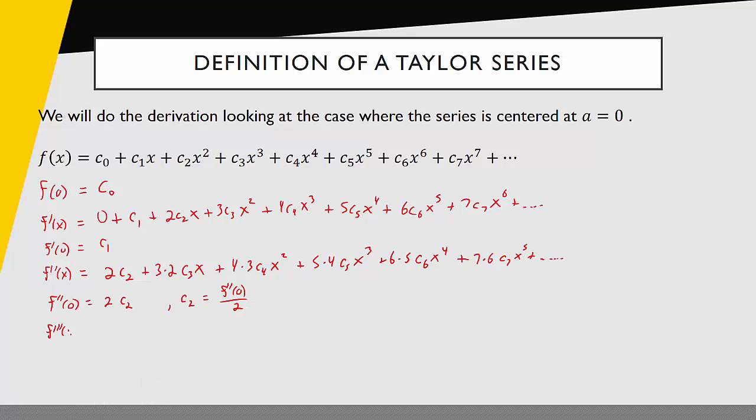Third derivative. Here's what I have for the third derivative. Once again if I evaluate this at zero, I'll get 3 times 2 times c3, and then all the rest of the terms go away. And so now it looks like I have c3 equals the third derivative evaluated at zero divided by 3 times 2.